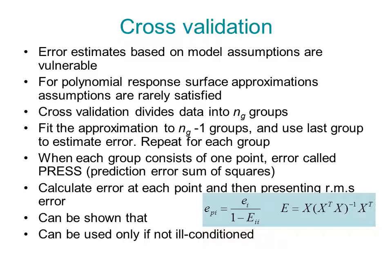Essentially you take the data, divide it into groups, and you take one group out, fit the rest of the data and calculate the error in the points that you took out. The simplest case of cross validation is when you leave one point out, that is each point is its own group, and then this process is called PRESS, prediction error sum of squares.